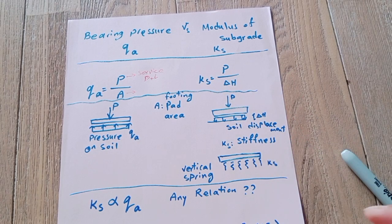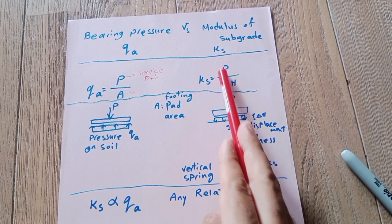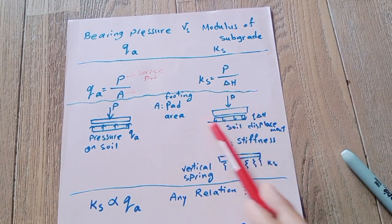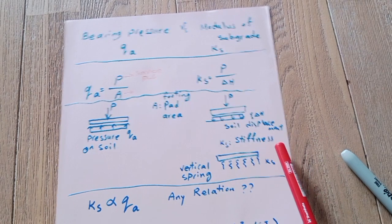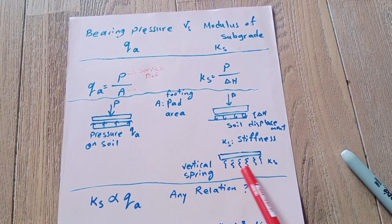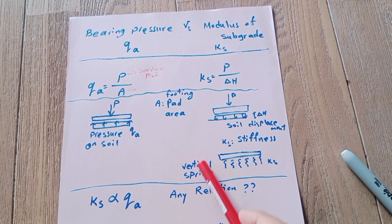To find ks, we put P over delta h. It gives the reaction of the springs—soil as a spring—so it's just spring stiffness resultant from applied load due to settlement of the soil. ks is stiffness of the springs. In general, we use vertical springs, but we may have some horizontal springs depending on soil type and geotechnical engineering advice to resist sliding of the foundation, but in general we need vertical ones.